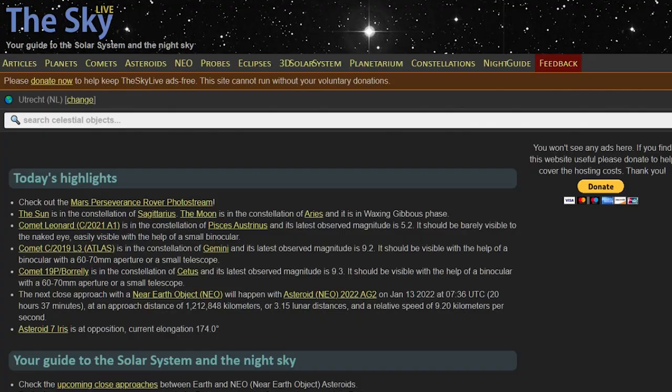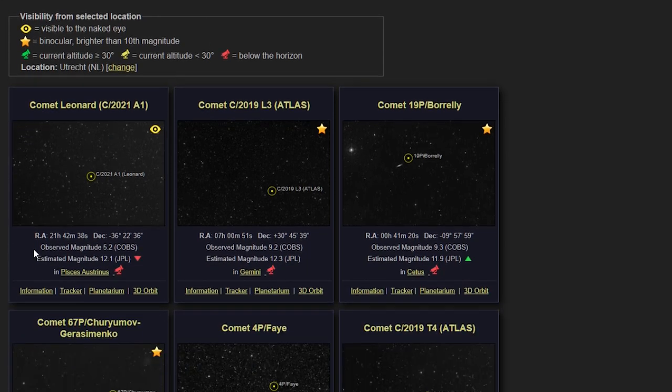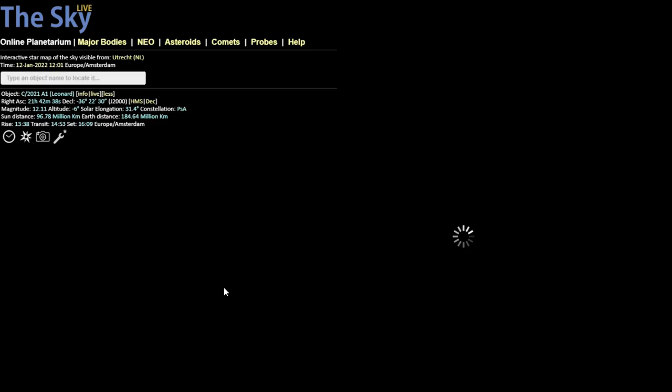Websites like The Sky Alive offer information on the exact location and brightness of a comet. Also, you can find star charts that demonstrate where you'll be able to spot the comet in the sky, depending on your location.